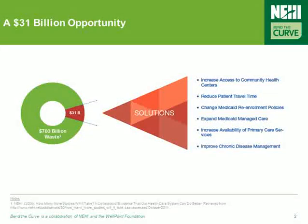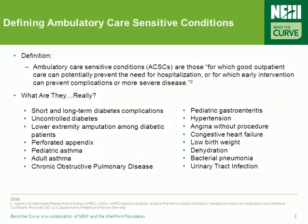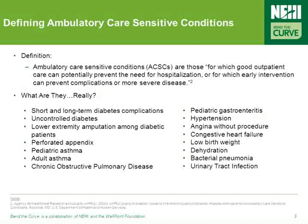Before we talk about the tools healthcare leaders can utilize to decrease hospital admissions for ACSCs, we first have to talk about what they actually are. Ambulatory care sensitive conditions are conditions which, through preventative care and appropriate treatment, should not cause a patient to be hospitalized. A few of the most common and well-known examples of ACSCs include asthma, diabetes, COPD, hypertension, congestive heart failure, and bacterial pneumonia.